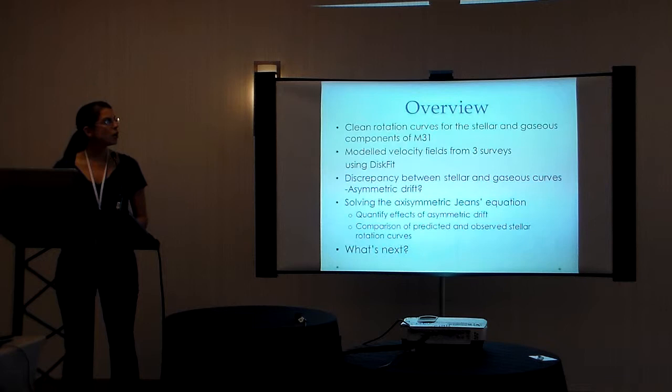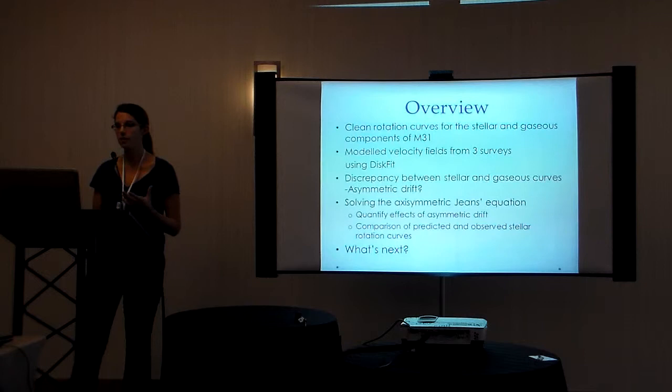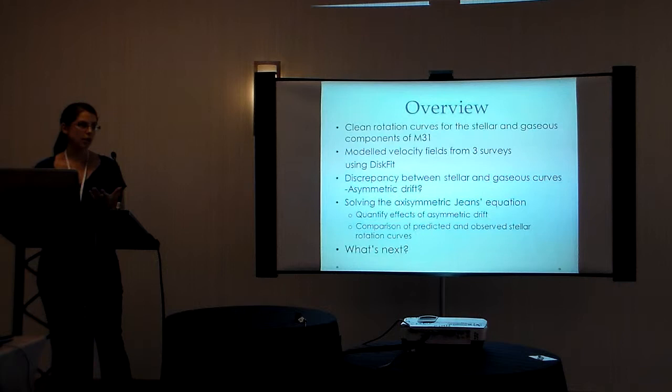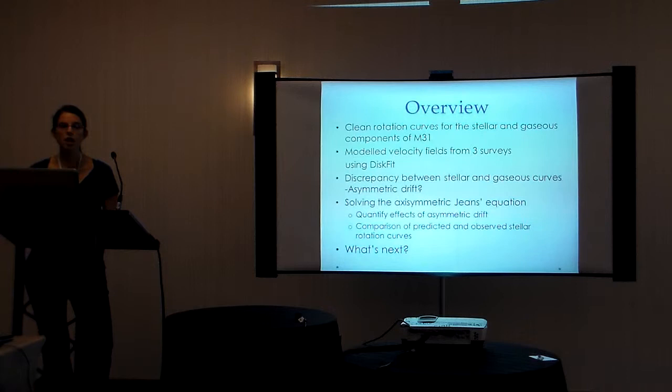So today I'm going to be talking a little bit about a summer project that I completed, where I developed clean rotation curves for the stellar and the gaseous components of M31. I did this by modeling velocity fields from three different surveys using a newly released program called DISC-BIT. As you will see, there is a discrepancy between the stellar and gaseous rotation curves for Andromeda, and this may be due to asymmetric drift.